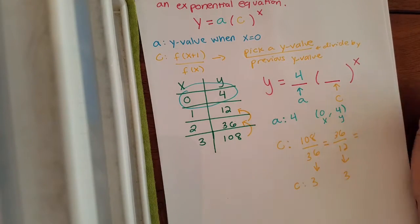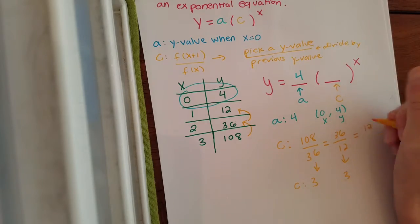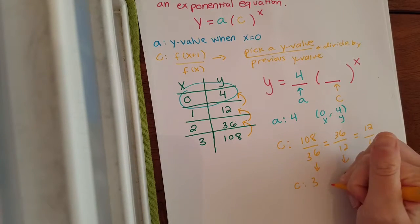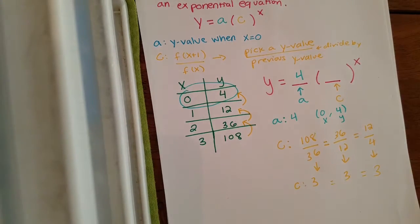Or the last one that you could pick, if you start with 12, the previous y value is a 4. And 12 divided by 4, I bet you can guess what that is, it's a 3. So no matter what you pick, you should get the same value for your c every time.